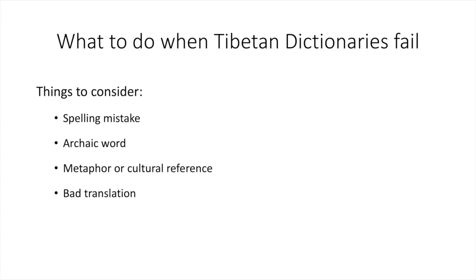In such a case, if the original language text is still extant, you should consult it; and if not, you should attempt to reconstruct or hypothesize the source term in the original language and give thought to other possible meanings that might make more sense in context. You can do this by consulting a Sanskrit dictionary such as Edgerton or Monier-Williams, or a Chinese dictionary such as Chuck Mueller's Digital Dictionary of Buddhism, all of which are searchable online. A final strategy, if all these other approaches fail, is to explore the larger body of Tibetan and Sanskrit literature, but this is a sufficiently large topic that it should be treated separately.